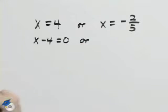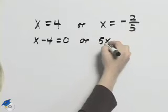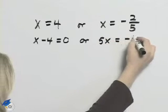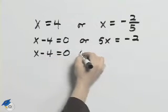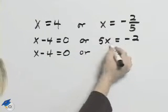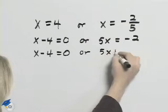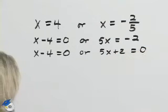Because we have a fraction I'm going to multiply both sides by 5 first for the right hand side equation. And then to get it set equal to 0 I'll add 2 to both sides so I'll have 5x plus 2 equals 0.